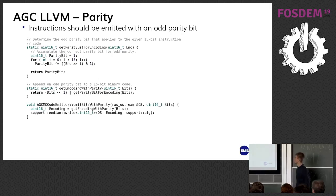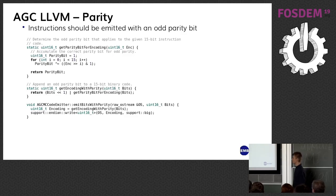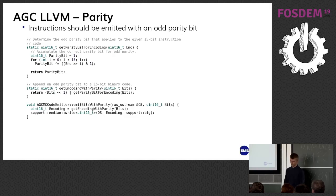A short note on parity: instructions in the AGC needed a parity bit to be emitted in the least significant bit. I accumulate the parity bit by XORing the current parity with the next incoming bit, and this is used when emitting bits in the MC code emitter.